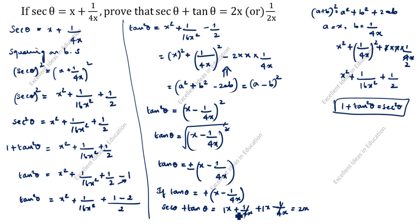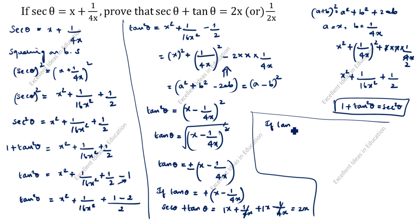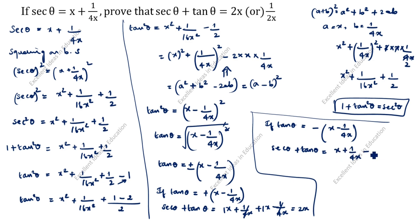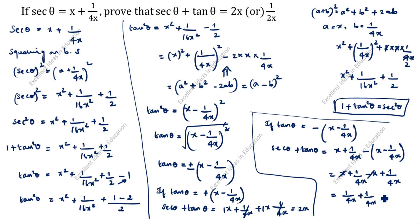The 1 by 4x terms cancel, and x plus x gives 2x. So the first answer is 2x. Now taking tan theta equal to negative x minus 1 by 4x: secant theta plus tan theta equals x plus 1 by 4x minus of x minus 1 by 4x. Removing the bracket, the x terms cancel, and 1 by 4x plus 1 by 4x equals 2 by 4x, which equals 1 by 2x.